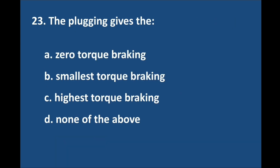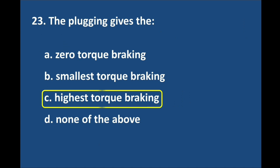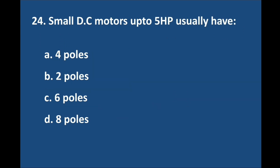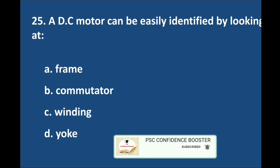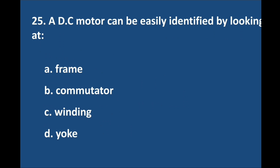Question number 23. The plugging gives — answer is option C: Highest torque braking. Question number 24. Small DC motors up to 5 HP usually have — answer is option B: 2 poles. Question number 25. A DC motor can be easily identified by looking at — answer is option B: Commutator.